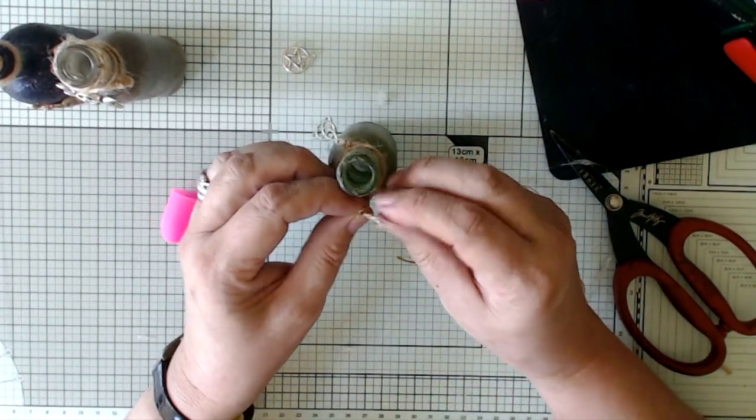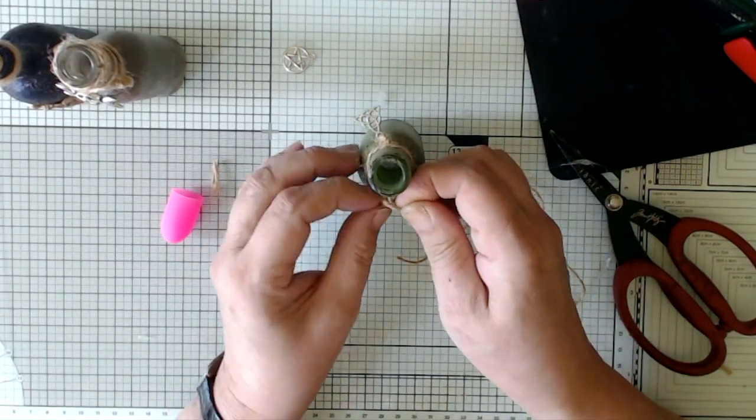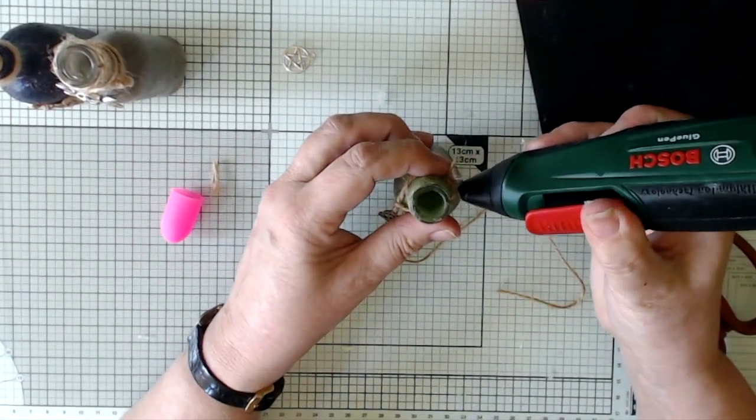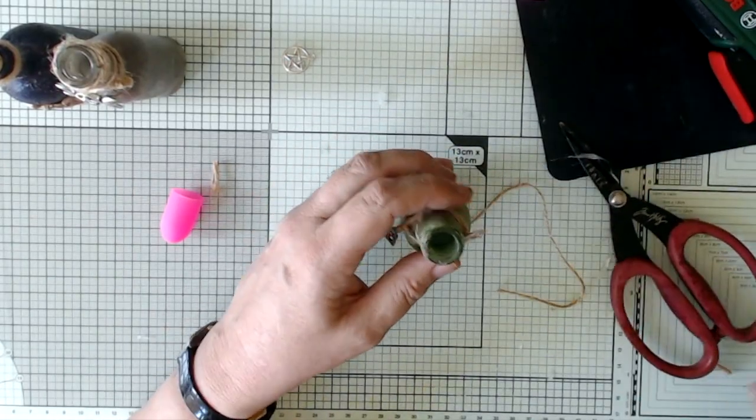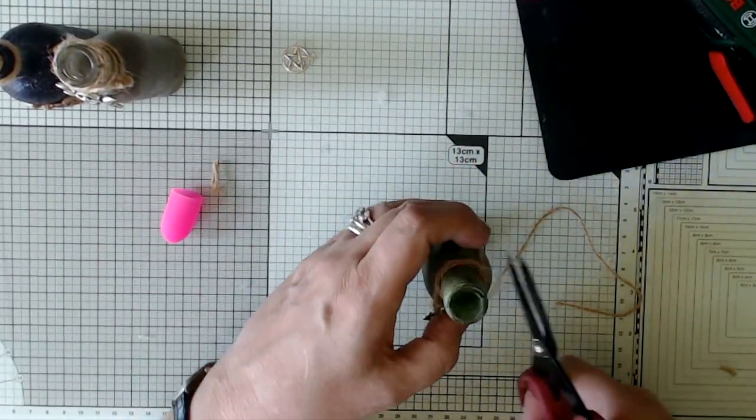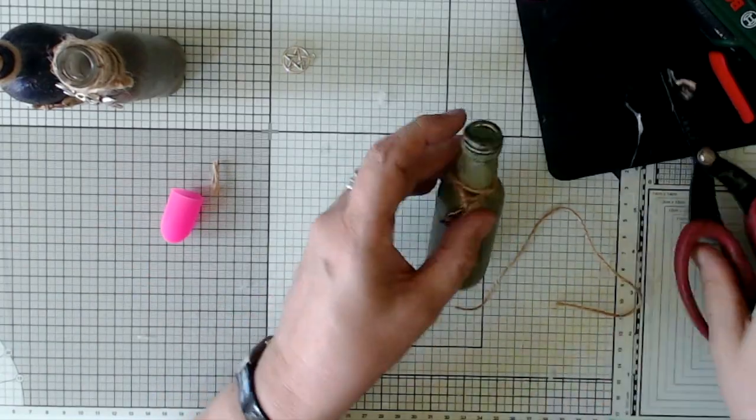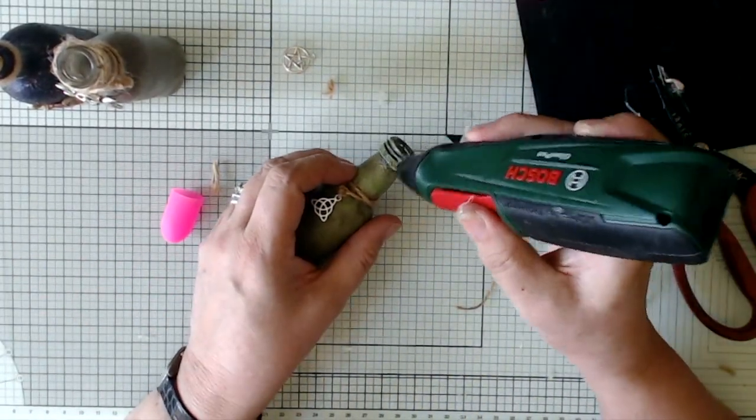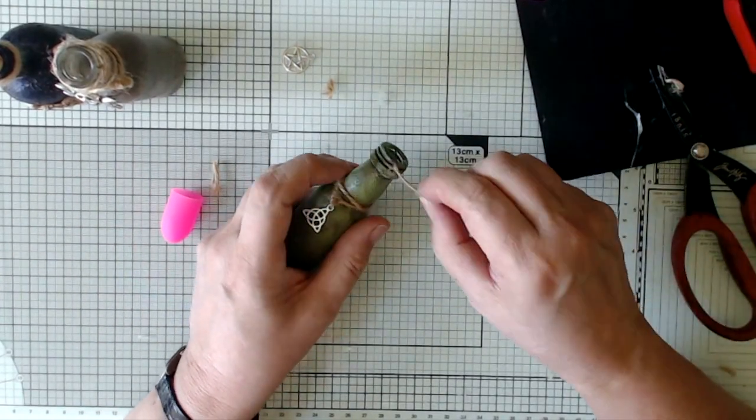Now it's time to add the finishing touches. I've got some twine and a little charm. This is something that I bought from a seller on eBay. I chose the Triquetra for this particular bottle. I've used different charms for the other bottles that I've been decorating. A little bit of hot glue keeps everything in place.